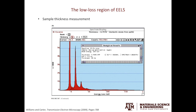One thing to note is that I can tell straight away that the sample is fairly thick — evidenced by the presence of multiple plasmon peaks. If we look at the energy of the plasmon peak, the first plasmon peak will be at E_P, the second at 2E_P, and the third at 3E_P. In the next video, we'll move beyond 50 eV and look at the core loss spectra and imaging.